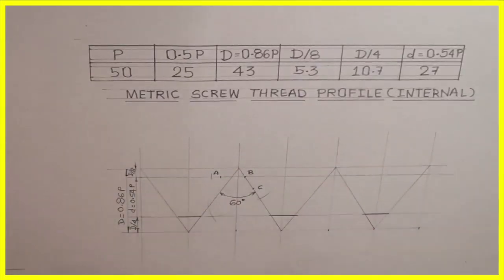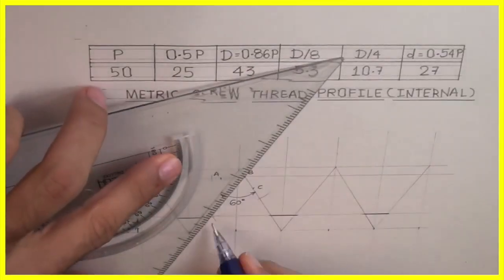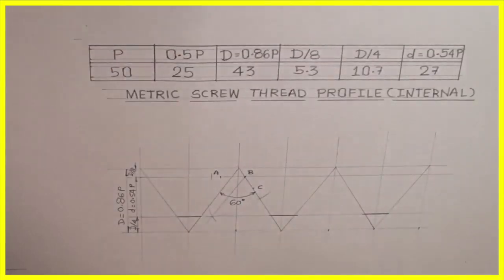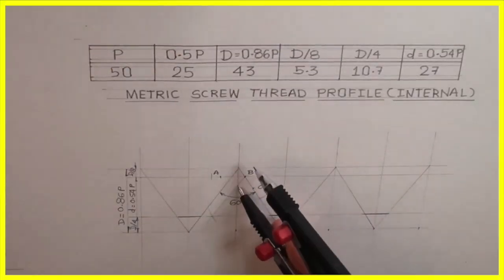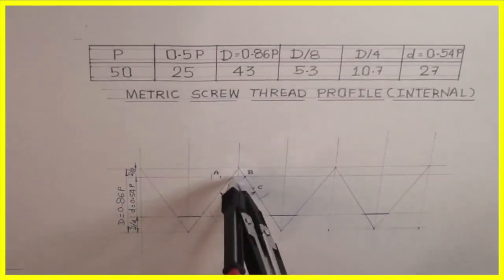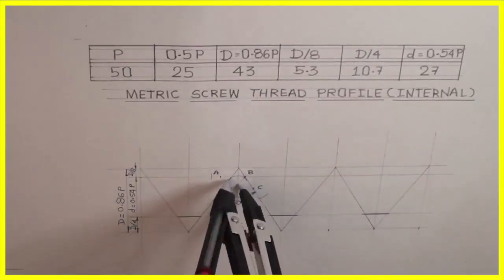From that point, we can draw an arc. See this. So from this point, we will draw an arc touching both the inclined lines.